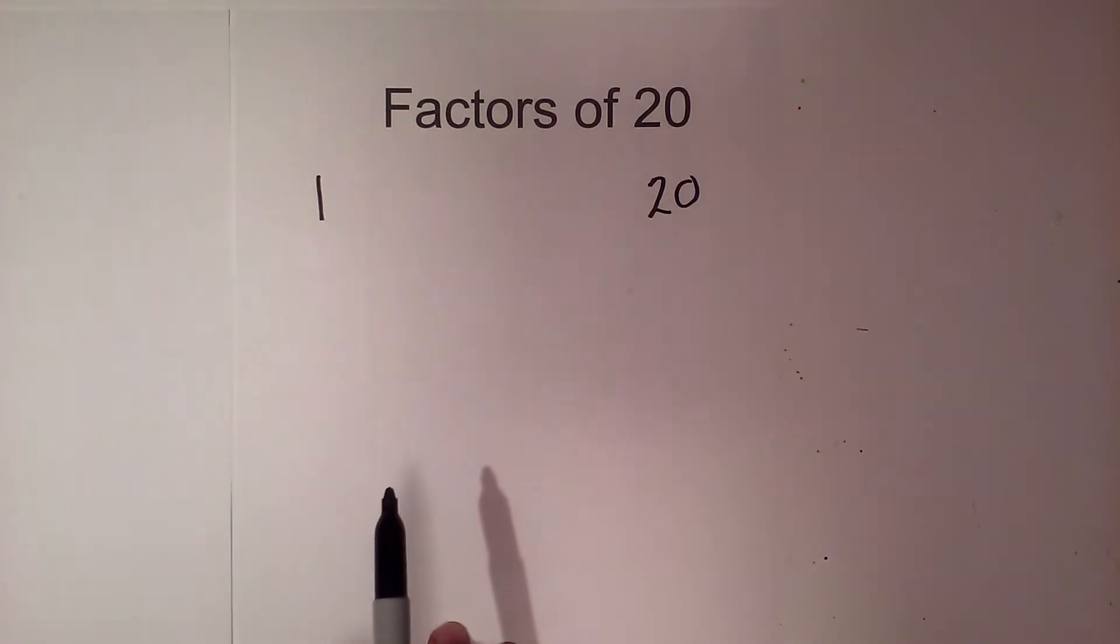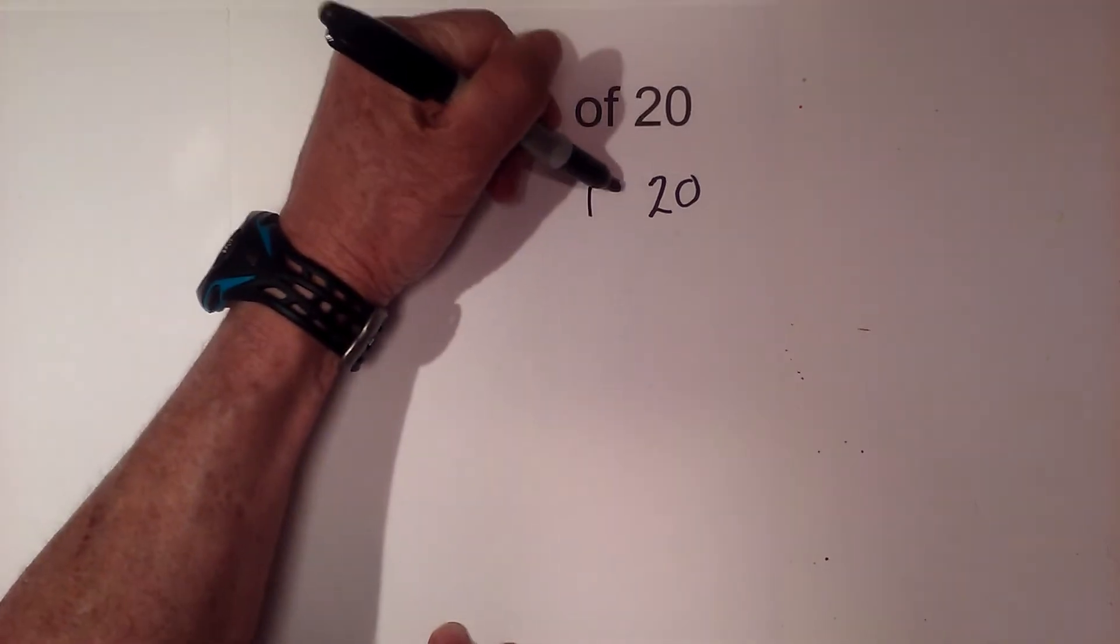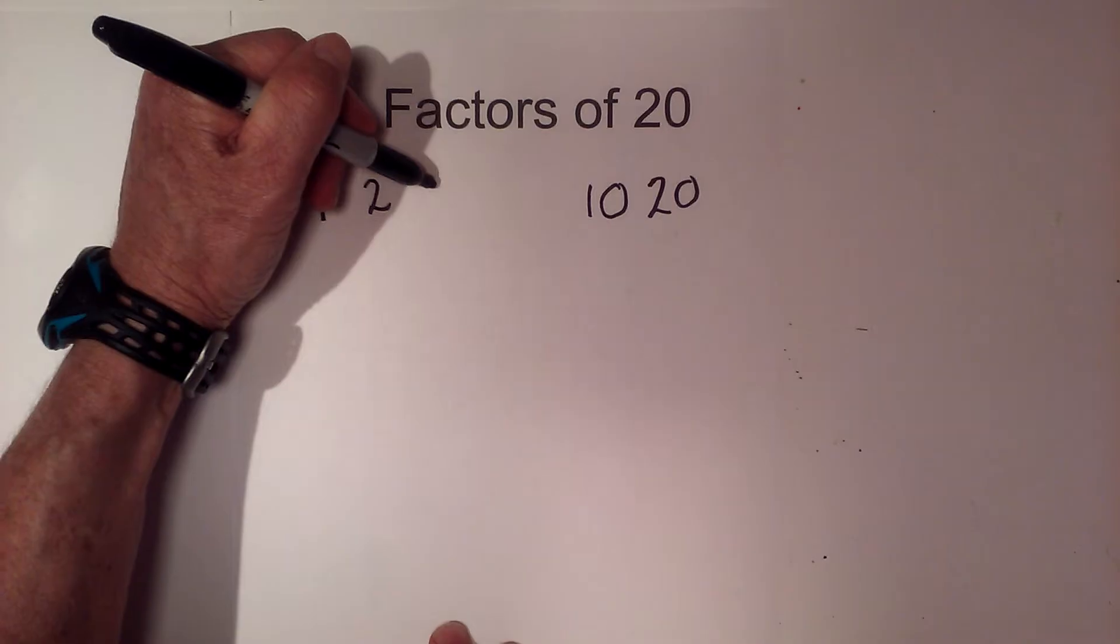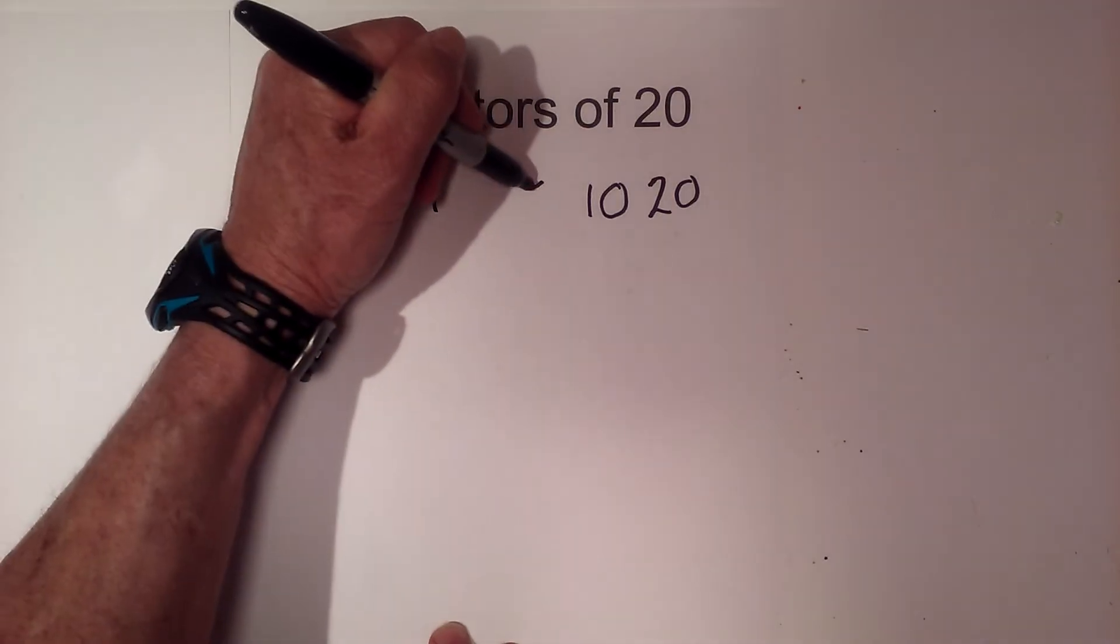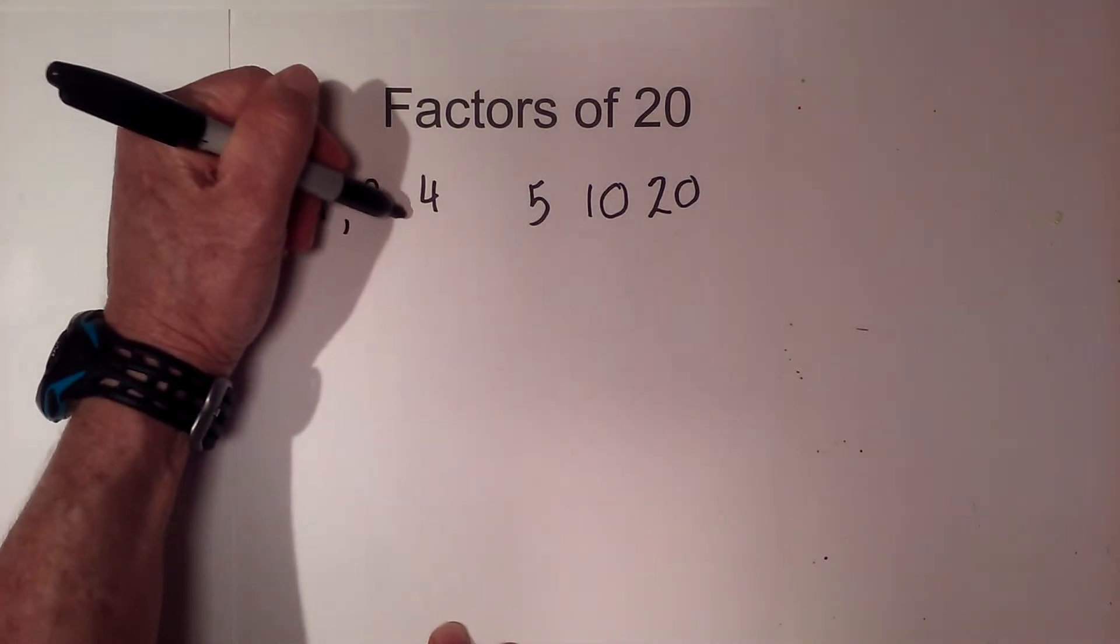So let's start off with 2. 2 times 10 will go into 20. 3 will not go into 20, but 4 will go into 20 five times. And there's no number in between, so I know that I have all the factors of 20.